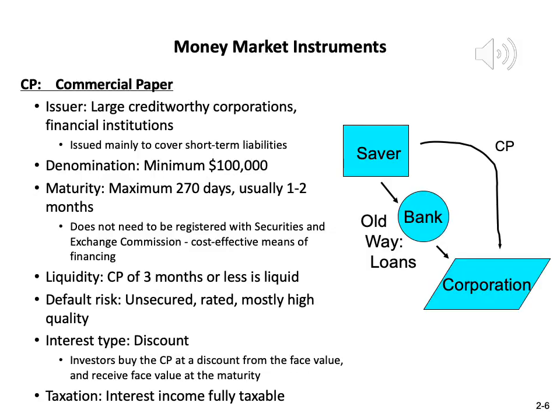Commercial papers are issued by large credit-worthy corporations or financial institutions, used mainly to cover short-term liabilities. In the old way of making loans, a saver deposits $1 million in a bank, and the bank lends it to a corporation like Google. The bank pays the saver 2% and charges Google 5%, keeping the 3% difference as profit. Google is not happy with this arrangement, so Google can issue commercial papers directly to you, the saver. You give $1 million directly to Google, and Google pays you 4%. Both parties are happy: you get 4% instead of 2%, and Google pays 4% instead of 5%.